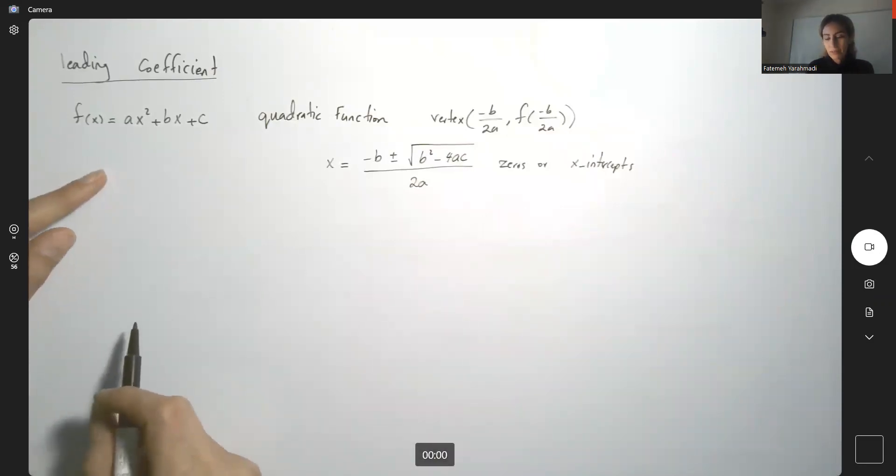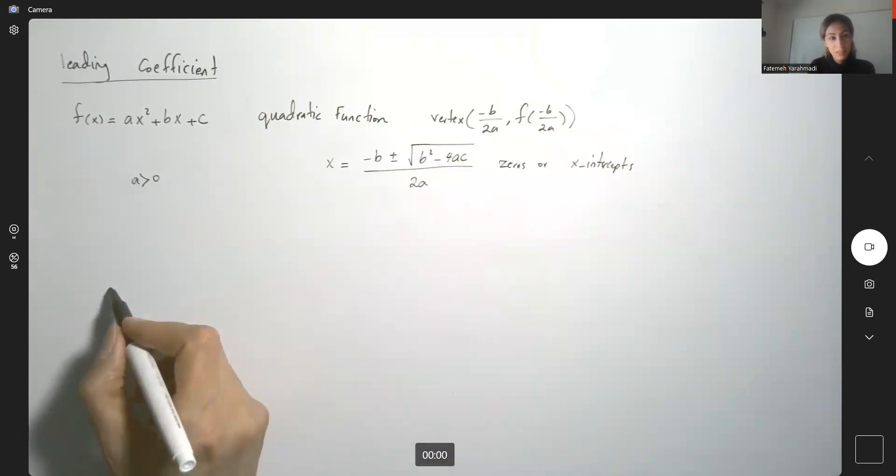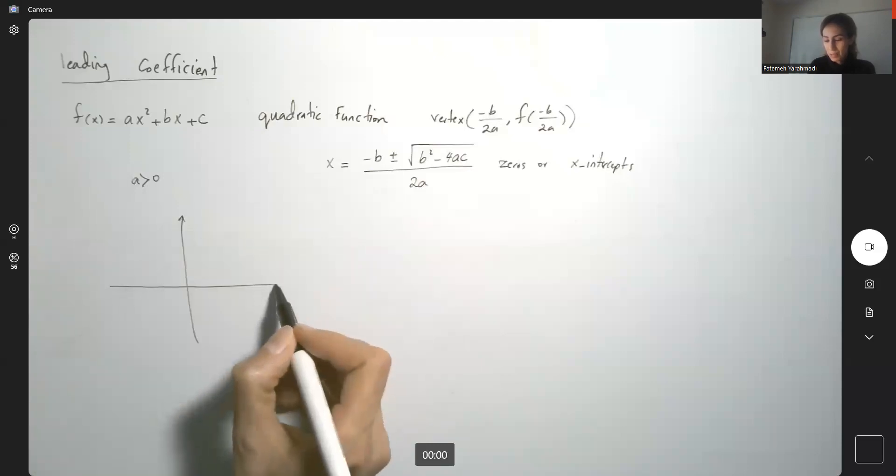Remember that we said if a is a positive number, then the graph opens up. This is the behavior of your family.